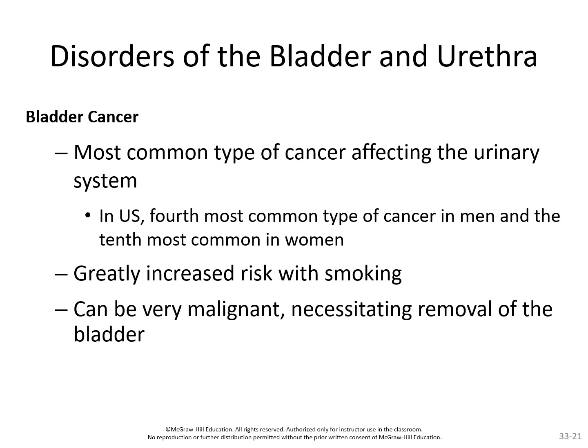Bladder cancer is the most common cancer affecting the urinary system — the fourth most common cancer in men and tenth in women. Smoking greatly increases the risk. Bladder cancer can be really malignant, growing and metastasizing very fast. Most bladder cancer arises from the epithelium lining the interior of the urinary bladder. Epithelial tissue normally has a high rate of cell division, and when that goes out of control, you get a cancer that grows extremely fast and colonizes other parts of the body rapidly.